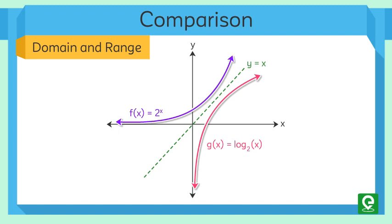Number two, domain and range: the domain of f(X) is the same as the range of g(X) and varies from negative infinity to positive infinity. The range of f(X) is the same as the domain of g(X) and varies from 0 to infinity.